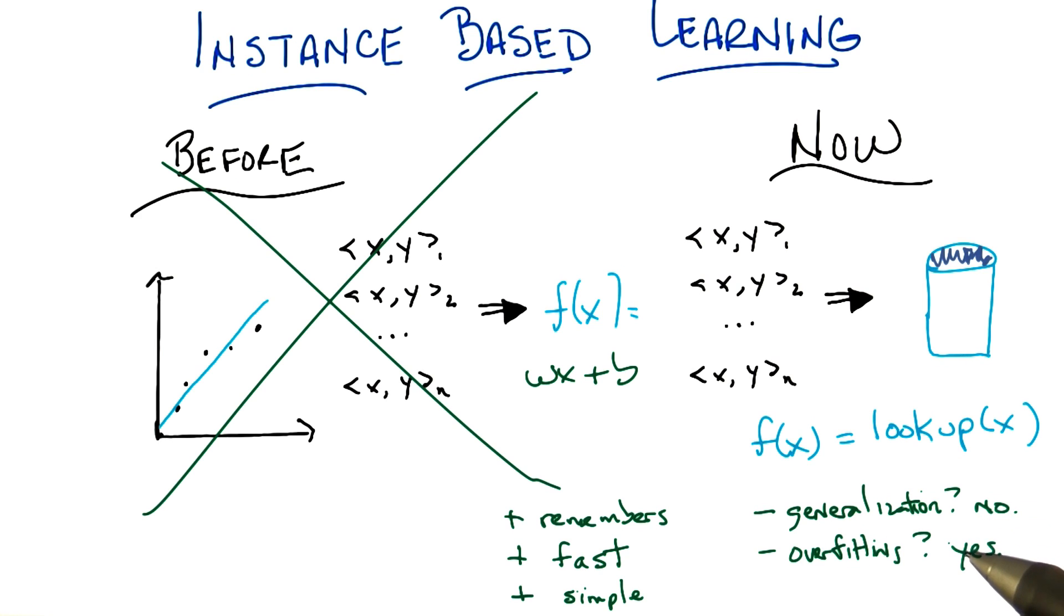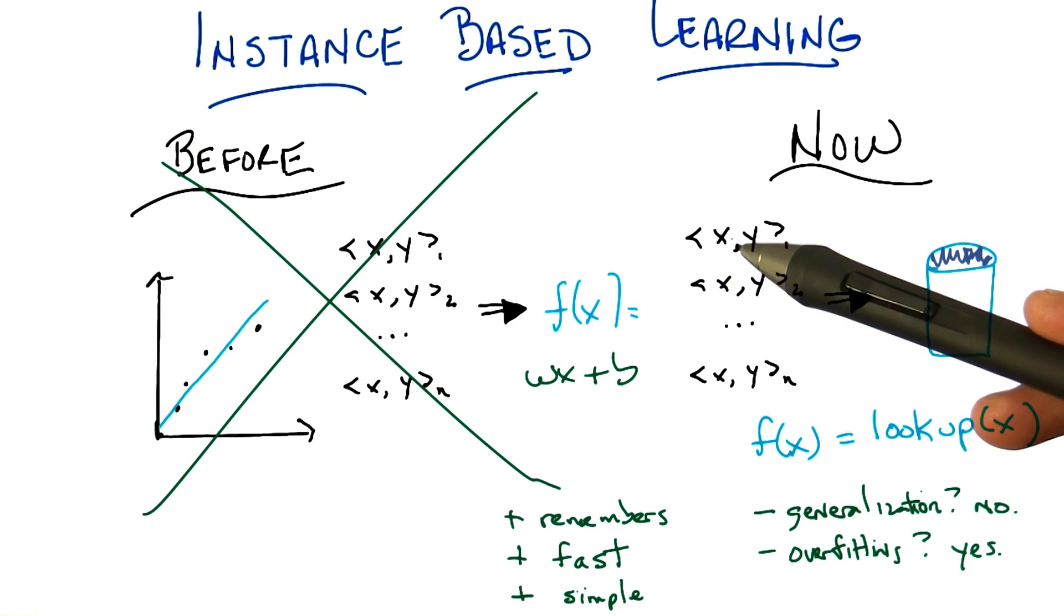And it can overfit in a couple of ways, right? It could overfit by believing the data too much, that is literally believing all of it. And what do you do if you have, you know, a couple of examples that are all the same. So I've got an x shows up multiple times but each time with a different y.